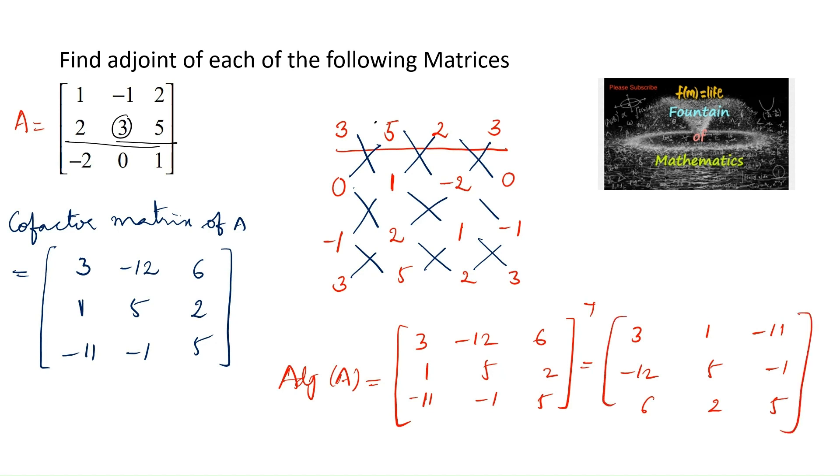So this is the adjoint of the matrix. Even from the shortcut method, by doing it vertically you can write it horizontally and directly get the adjoint matrix. Thank you.